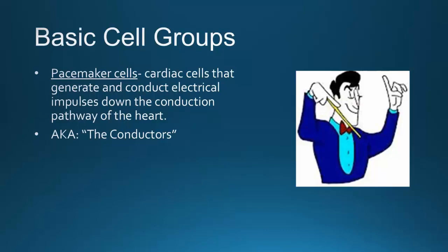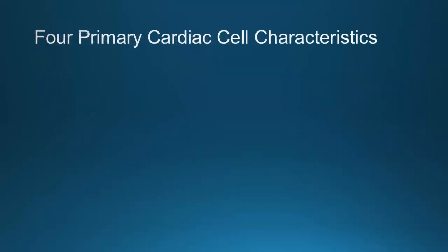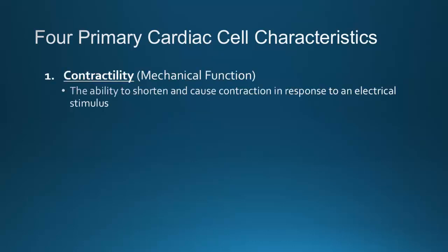We'll call the pacemaker cells the conductors. Their primary function is to generate and conduct electrical impulses. They have the ability to create electrical impulses without being stimulated by a nerve, which is a unique property. There are four primary cardiac cell characteristics: three electrical and one mechanical. The mechanical property is contractility — the ability to shorten and cause contraction in response to an electrical stimulus.